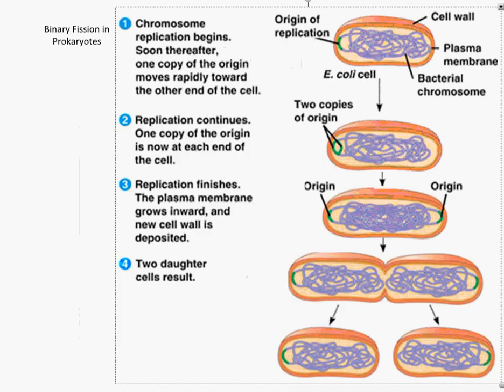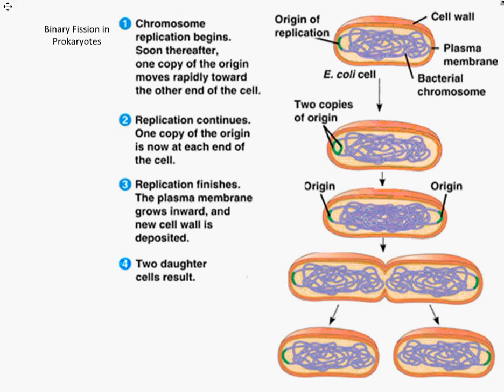First we'll look at the concept of binary fission. Binary fission takes place in prokaryotes and is the simplest version of cell replication because prokaryotes are very simple cells — basically a cell membrane with cytoplasm and DNA inside. The steps are very simple: the DNA begins replication at the origin, the DNA is fully replicated, and then the cytoplasm divides to produce two new cells.